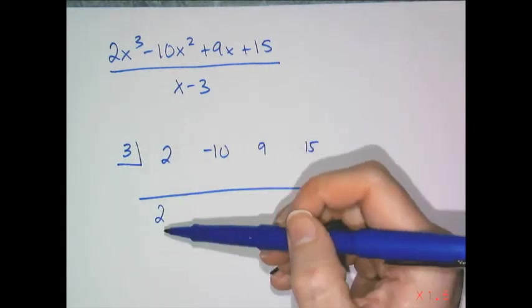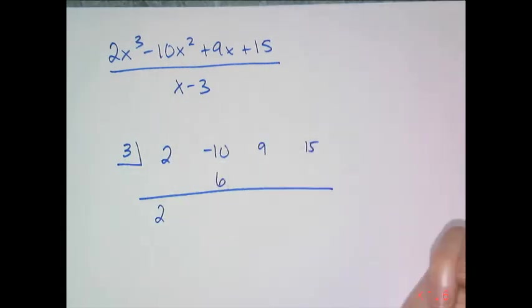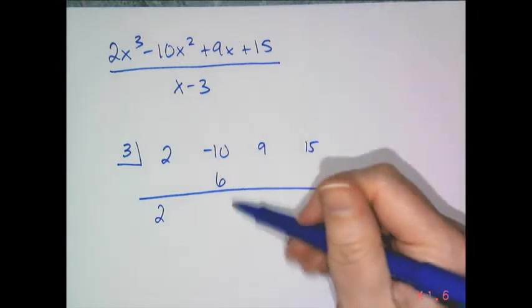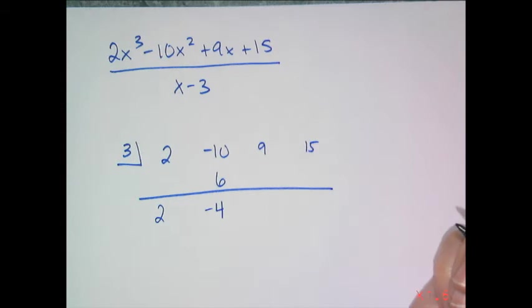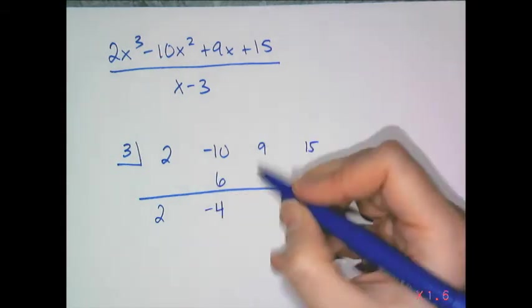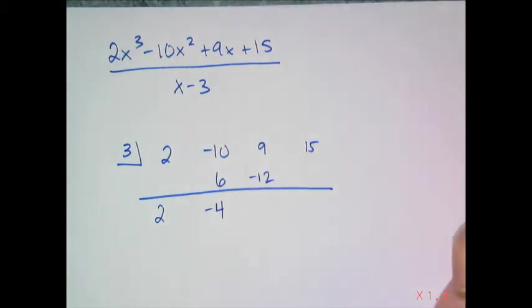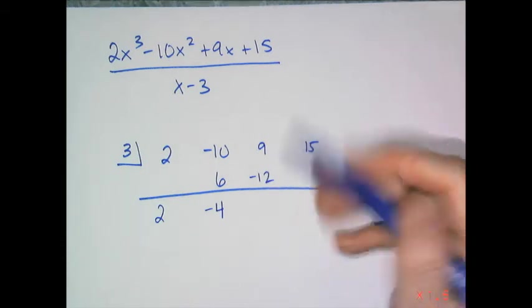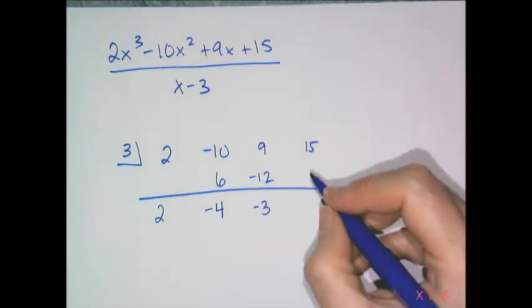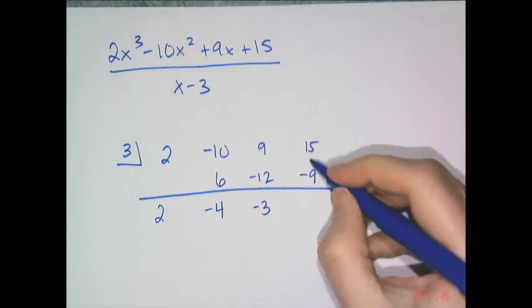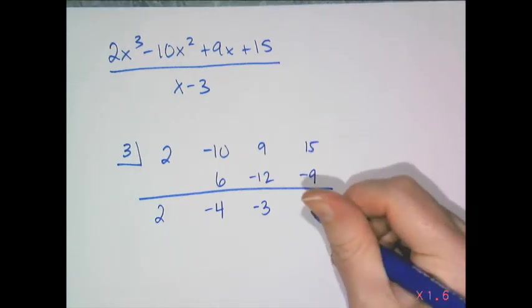Then I multiply 3 times 2 and I get 6. I put 6 right there and then I add those two numbers together and I get negative 4. Then I multiply 3 times negative 4 and I get a negative 12. Then I add those two numbers together and I get a negative 3. Then 3 times negative 3 is negative 9.